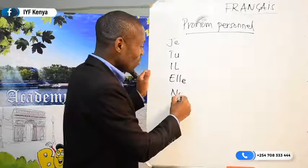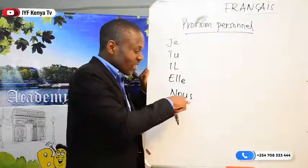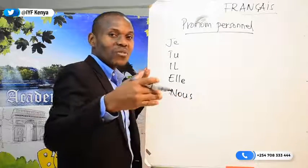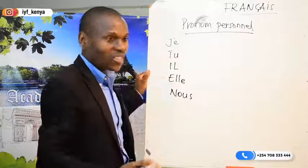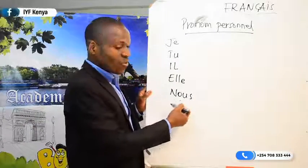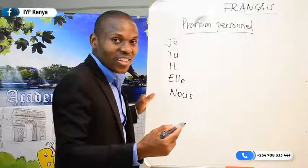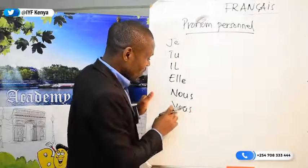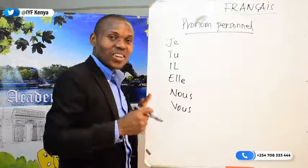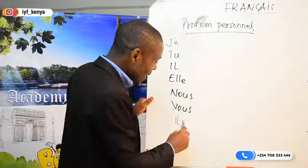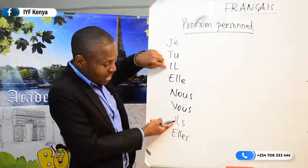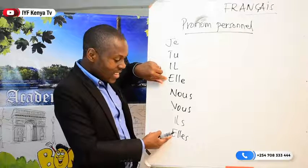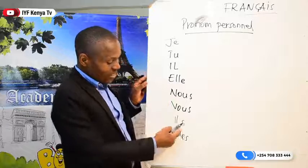Then we have 'nous.' Remember I talked about consonants — the consonant ending the French word, most of those last consonants don't sound. That's why we say 'nous' instead of 'nous-s.' Don't say 'nous-s' — that doesn't exist in French, you have to say 'nous.' Then we have 'vous' — don't say 'vous-s,' you have to say 'vous.' And then you have il and elle in plural form: 'ils' and 'elles' — same sound, just in plural form.